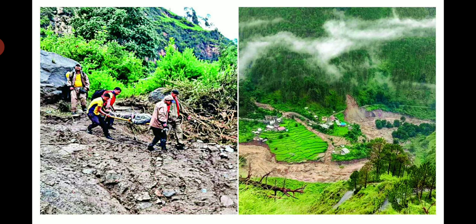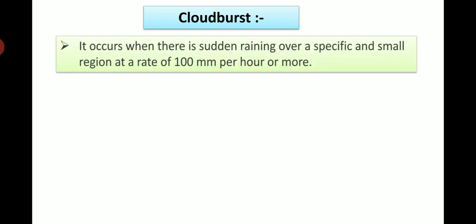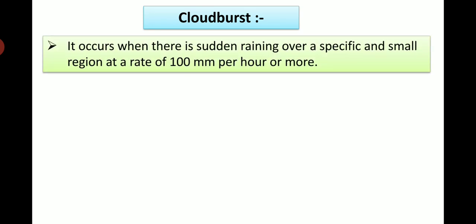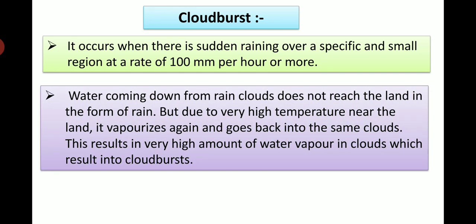See these pictures. We can see effects of cloudburst. Cloudburst occurs when there is sudden raining over a specific and small region at a rate of 100 mm per hour or more. Water coming down from rain clouds does not reach the land in the form of rain but due to very high temperature near the land it vaporizes again and goes back into the same clouds. This results in very high amount of water vapor in clouds which result into cloudburst.